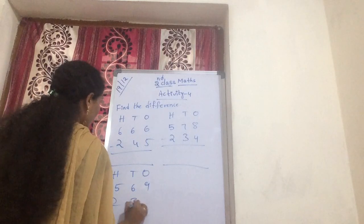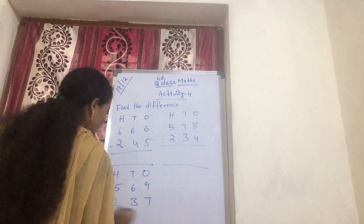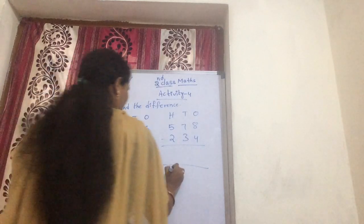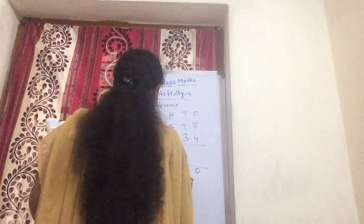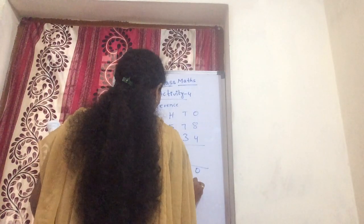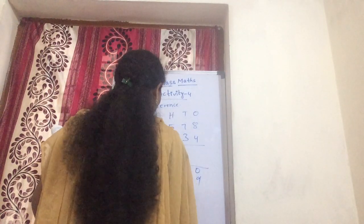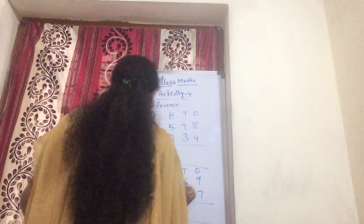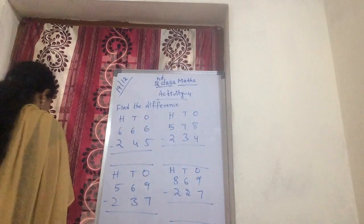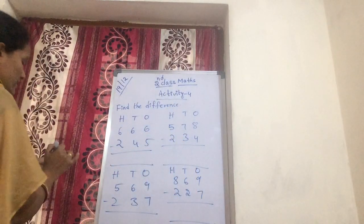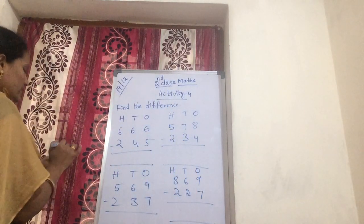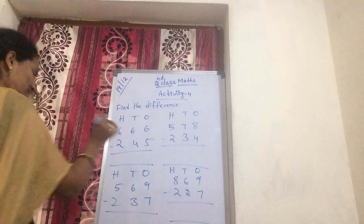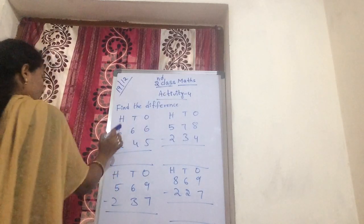This is also without borrowing. This is also without borrowing. Now first you are reading the number — ones, tens, hundreds.